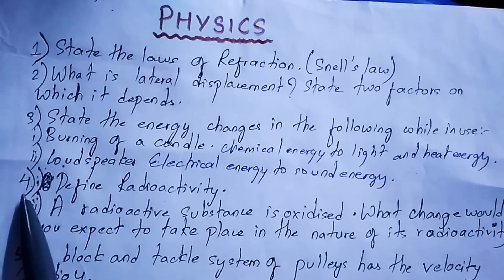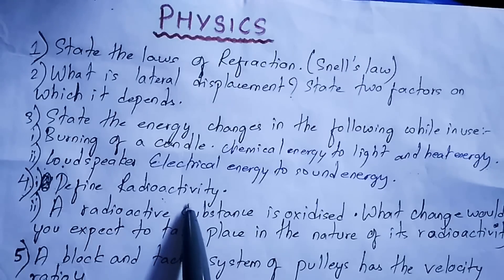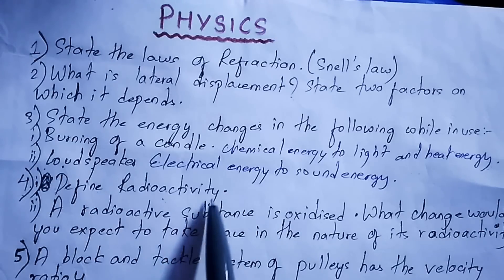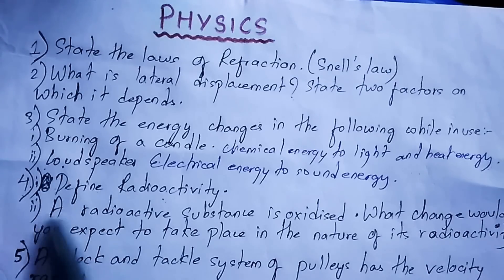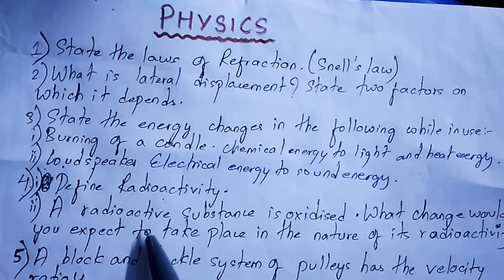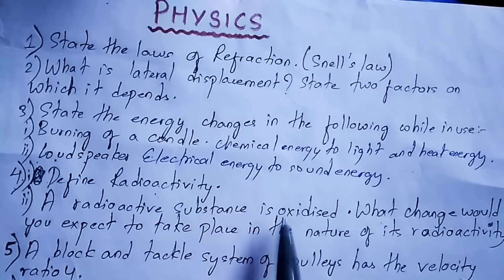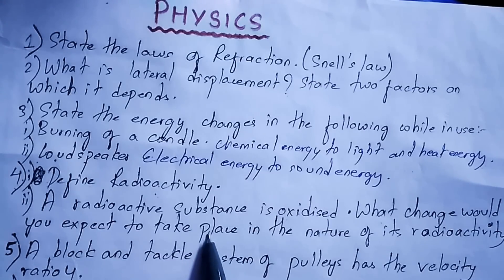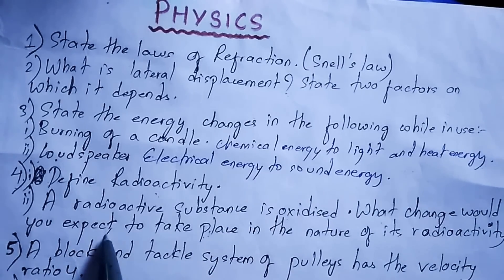Question number four: define radioactivity. Radioactivity is the process of spontaneous emission of alpha, beta, and gamma radiations from the nuclei of atoms during their decay. Sub-part: a radioactive substance is oxidized — what change would you expect in the nature of its radioactivity? There will be no change, because radioactivity is a nuclear phenomenon and oxidation does not affect the nucleus.